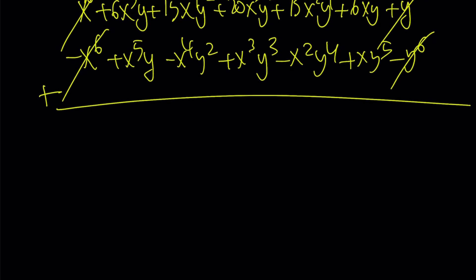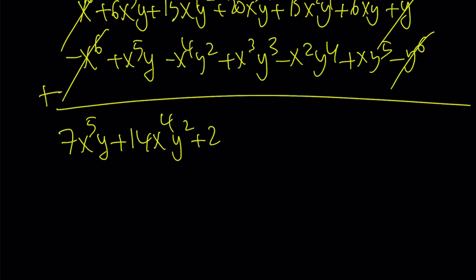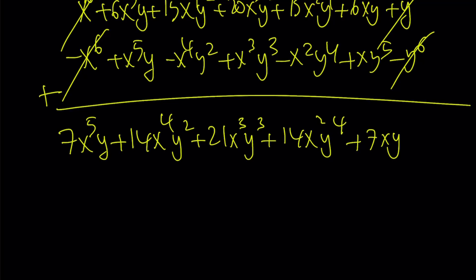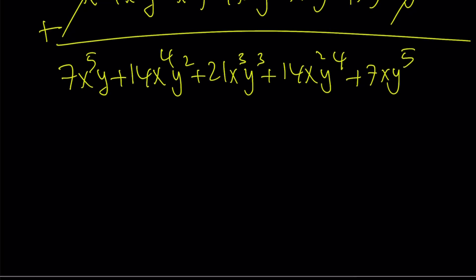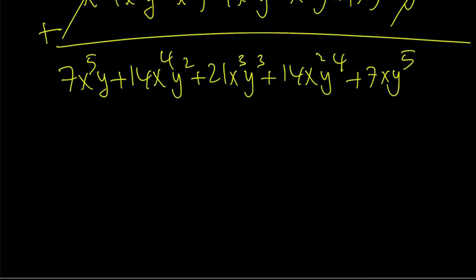Let's go ahead and add them up. This gives us 7x to the 5th y, plus 14x to the 4th y squared, plus 21x cubed y cubed, plus 14x squared y to the 4th, plus 7xy to the 5th. Again, we have that nice symmetry where the coefficients are equal when they're the same distance from the center, and the powers alternate. This is still a handful expression, so let's see how we can simplify this.